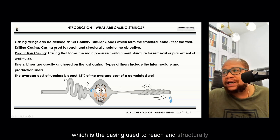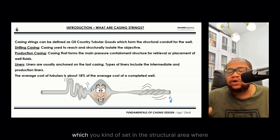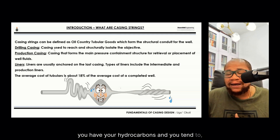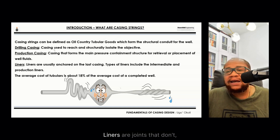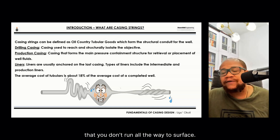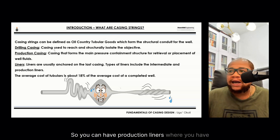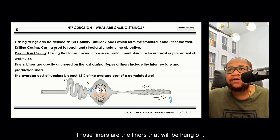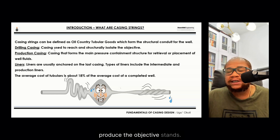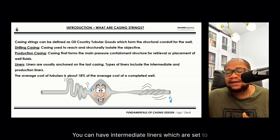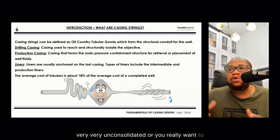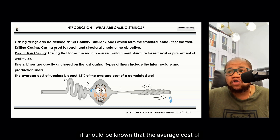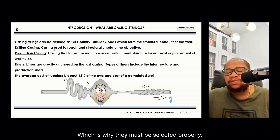You have the drilling casing, which is used to reach and structurally isolate the objective. You have the production casing, which is set in the area where you have your hydrocarbons and intend to produce — it will be perforated. Then you have liners, which are joints you don't run all the way to surface; they are hung off in the last casing string. You can have production liners or intermediate liners, which isolate high-pressured or unconsolidated zones. The average cost of tubulars is about 18 to 25 percent of the average well cost, which is why they must be designed and selected properly.